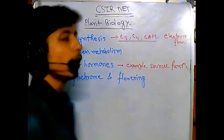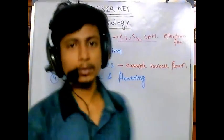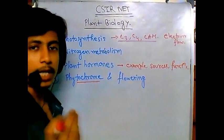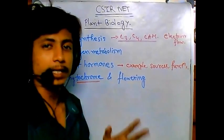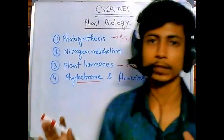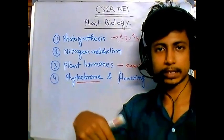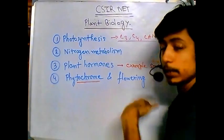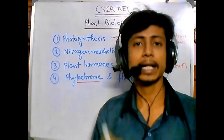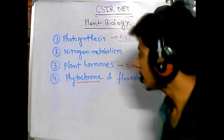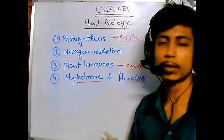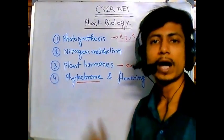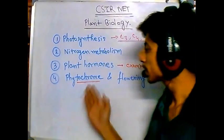The fourth topic is phytochrome and flowering of the plant. Phytochrome is a chemical that controls flowering depending on the amount of light received throughout the day. You need to know different examples of flowering plants, such as long day plants and short day plants. You should also understand the structure of phytochrome, how it functions, and especially its two forms: phytochrome red (PR) and phytochrome far-red (PFR).